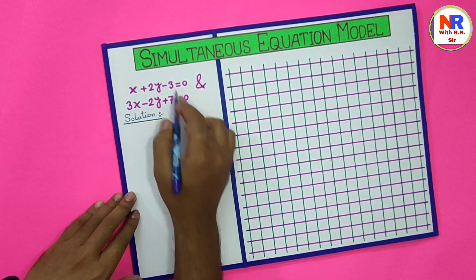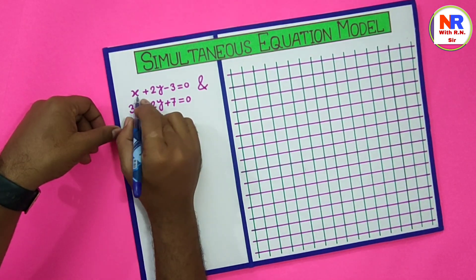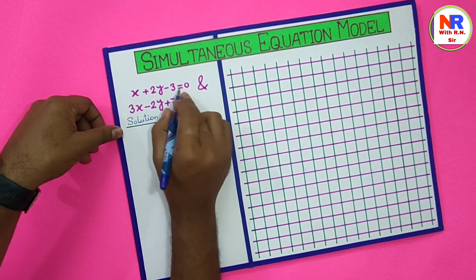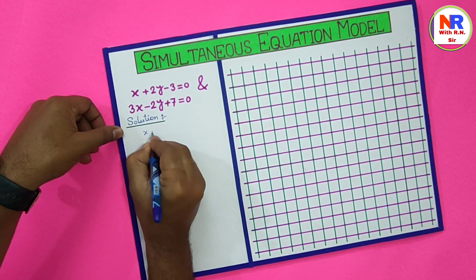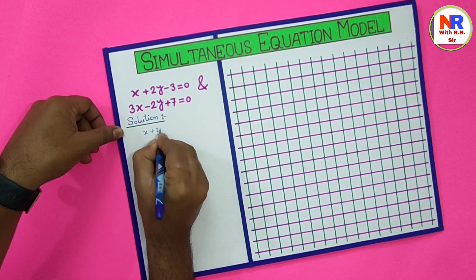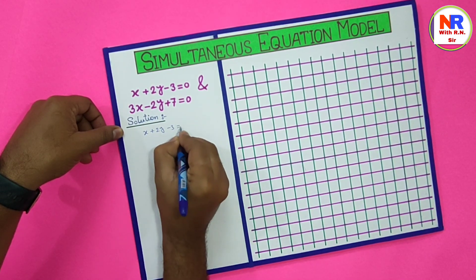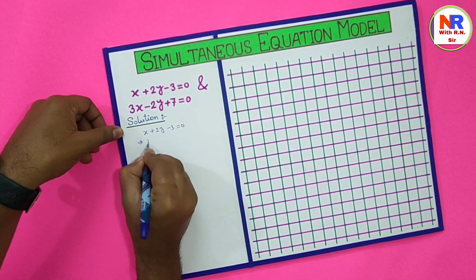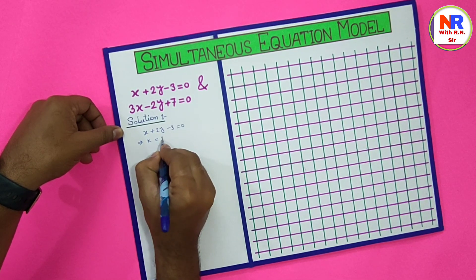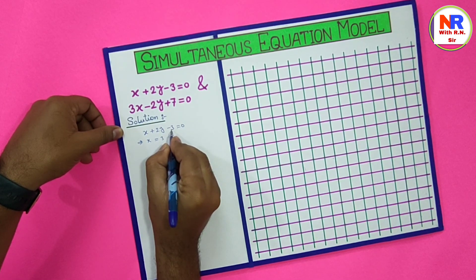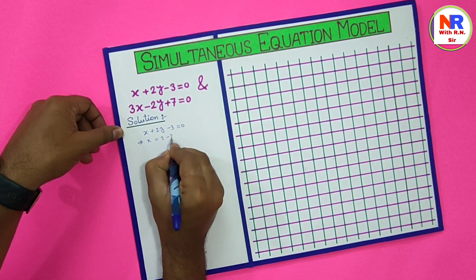These are the two equations we need to simplify. First, we write the equation x plus 2y minus 3 equal to 0. That means we can write x equal to 3 minus 2y.